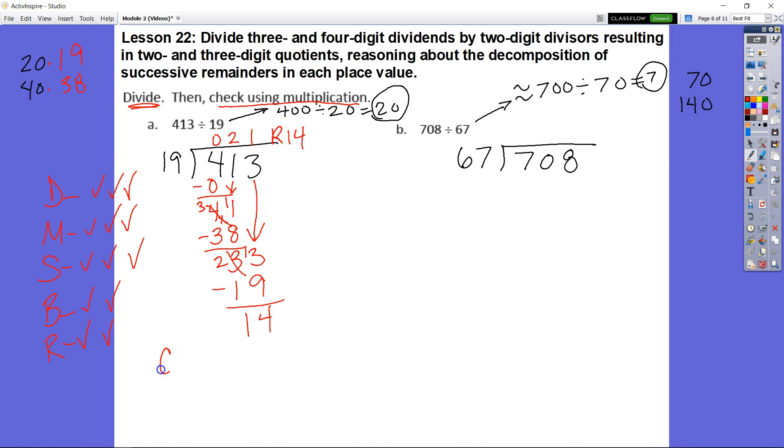So if I wanted to check that, just do the multiplication. And I would say my divisor times my quotient plus my remainder should give me my dividend. Let's see. 19 times 21. That's 19. And I have 2 times 19 is 38. When I add 19 plus 38, I get 9, 9 tens and 3 hundreds.